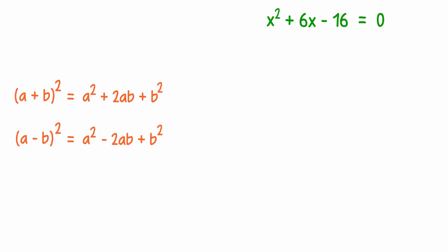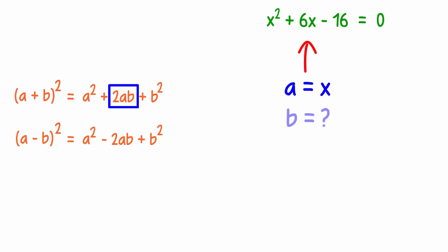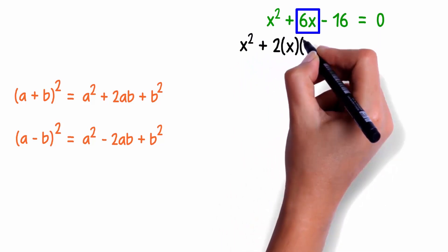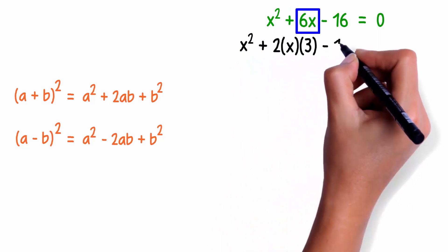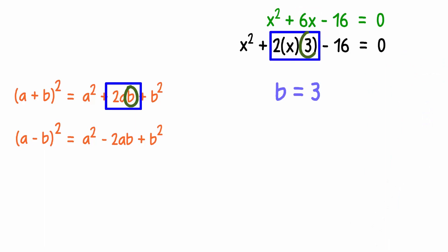The first step should be to just look at the variable part, which is x² + 6x. Now we write this term in the form 2ab. Here, a is x and we don't know what b is. We can write it as x² + 2 times x times 3 minus 16 equals 0. Now that we've written it in the 2ab form, we know what b is.